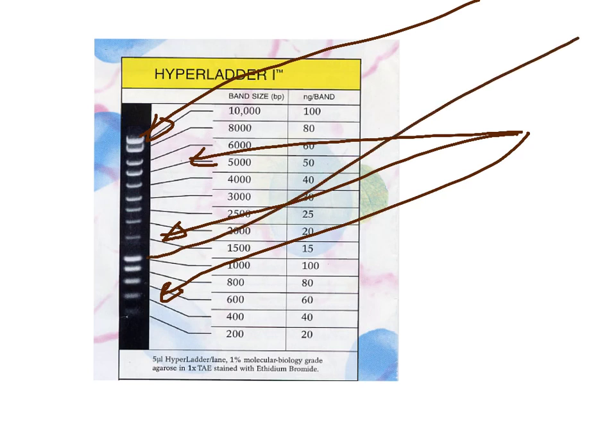And note the 1 and a half thousand base pairs is quite intense. And that's deliberate so that you can see where you are on your gel if some of these bands have electrophoresed on the gel, off the gel, or the gel hasn't been electrophoresed very far.